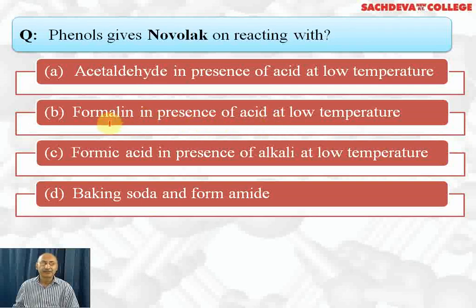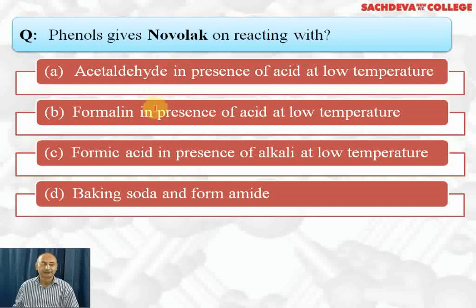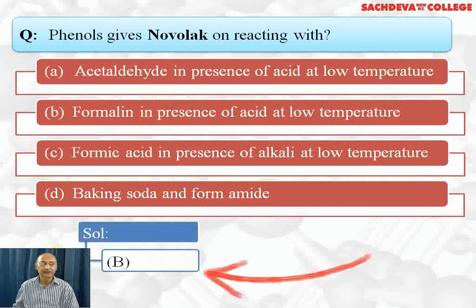Formalin is formaldehyde solution — a 40% aqueous solution of formaldehyde in water. Phenol and formaldehyde condense together to form a linear polymer called Novolac. If the polymerization is continued for a long time, a cross-linked thermosetting plastic called Bakelite is formed. The correct answer is B.